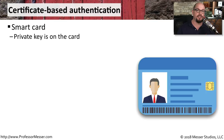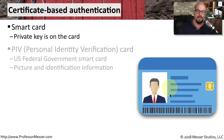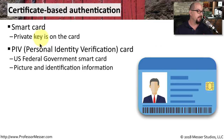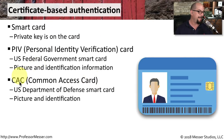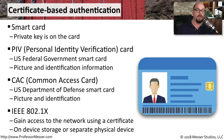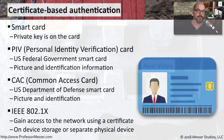Certificate-based authentication is a popular form of determining access. One example is a smart card where the private key on the card serves as the certificate for the person holding it. You can also see certificates used in a PIV card — that's the personal identity verification card used by the US federal government — which includes a picture, identification, and the certificate on the card. The US Department of Defense has a similar card called the Common Access Card, or CAC. Alternatively, you can put the certificate on a mobile device or laptop, and when you authenticate, it uses 802.1x to authenticate using the certificate on that physical device.